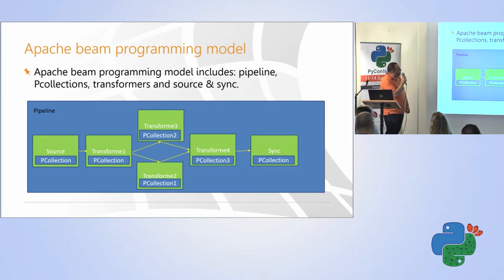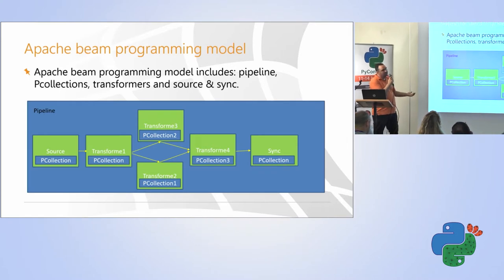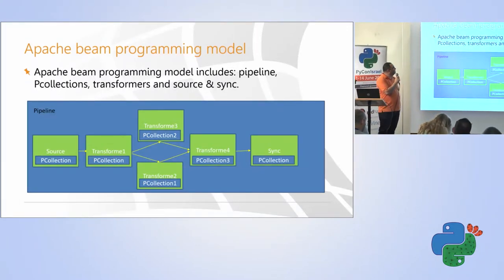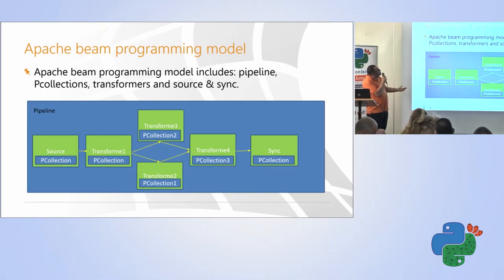So, as I said, let's talk about the programming model of Apache Beam. Which is actually, as I said before, it's a graph. So, it includes pipeline, p-collections, transformer, and source and sink.